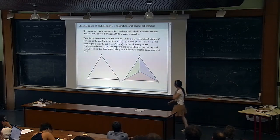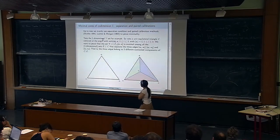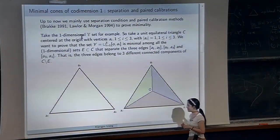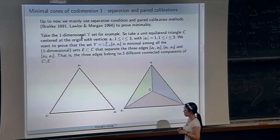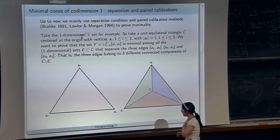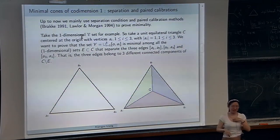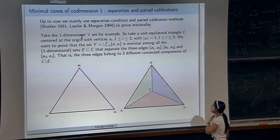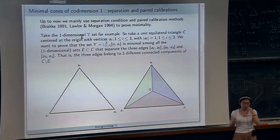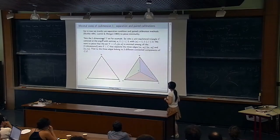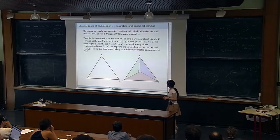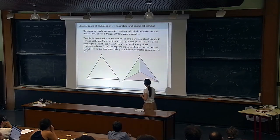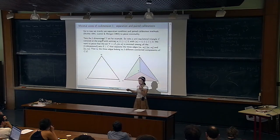For co-dimension-one sets, to prove minimality we mainly use the separation condition and the paired calibration method, invented by Brakke in 1991 and Lawlor and Morgan in 1994. I will use the one-dimensional Y-set to explain how this works. We want to prove that the one-dimensional Y-set in R^2 is one-dimensional minimal.